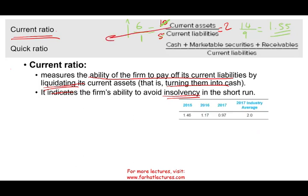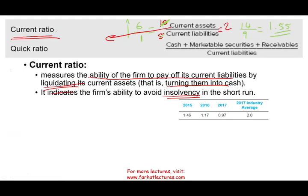Always, the best way to evaluate a ratio is to compare it to a benchmark — a prior year or an industry average. For example, this sample company had a current ratio of 1.46, then 1.17, then 0.97. The current ratio is deteriorating over time. And by 2017, the industry ratio is double that of this company. This company is going to be running into trouble unless they have a good explanation for why their current ratio is half of the industry.